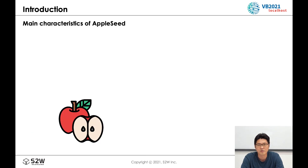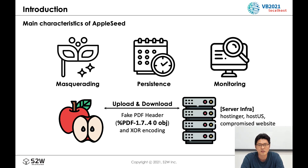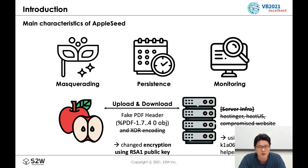The main characteristics of AppleSeed are briefly summarized as follows. It masquerades using normal names like documents and software. It registers registry and scheduler entries for persistence. It monitors folder, keyboard, screen capture, and USB continuously. AppleSeed communicates with a C2 server for data exfiltration using a fake PDF header and XOR encoding, but the encryption method has recently changed to using an RSA public key and using email as the C2 server.